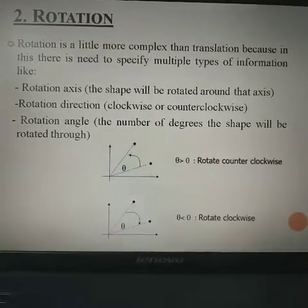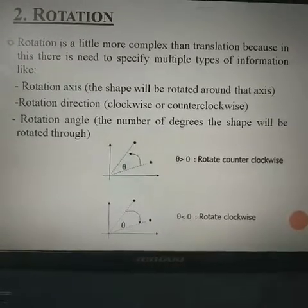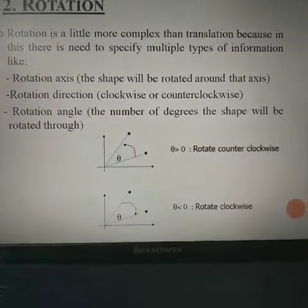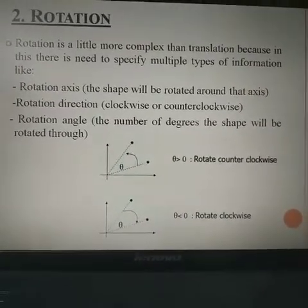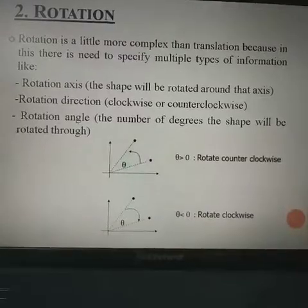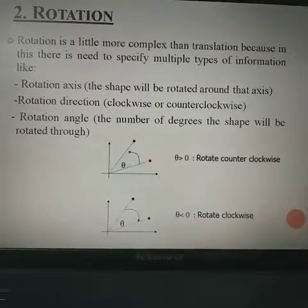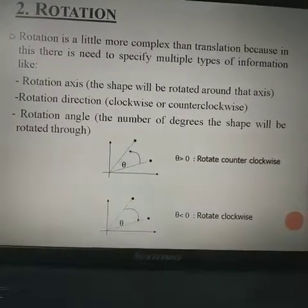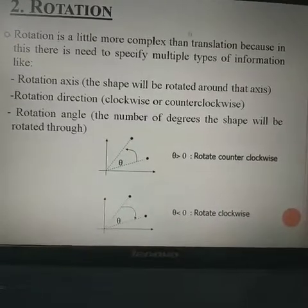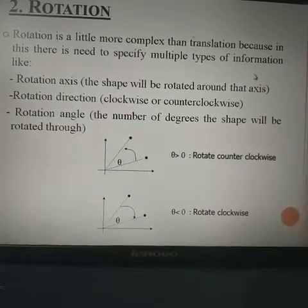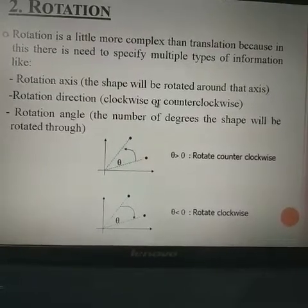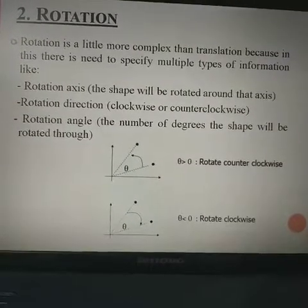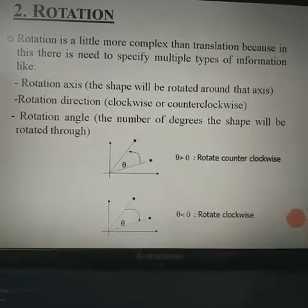The next transformation is rotation. Rotation is more complex than translation because it requires specifying multiple types of information: the axis on which the shape or object is to be rotated, the direction of rotation, and the angle to be used. The shape will be rotated around the rotation axis — either the x-axis or the y-axis — either clockwise or anti-clockwise, through a specified number of degrees.